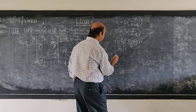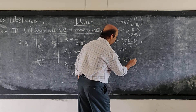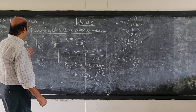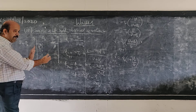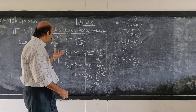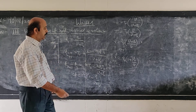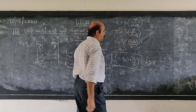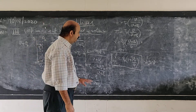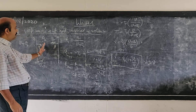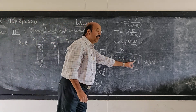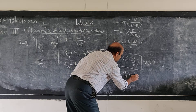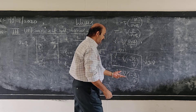The apparent frequency equals (1/T0) times (V plus V0) by V, which can be written as μ' = μ0 × (1 + V0/V). When the observer is moving towards the stationary source, it receives more crests per second than actually generated, so apparent frequency is greater than actual frequency. Similarly, if the observer is moving away from the source, change the sign of V0, and the apparent frequency becomes μ0 × (1 − V0/V), so frequency decreases.